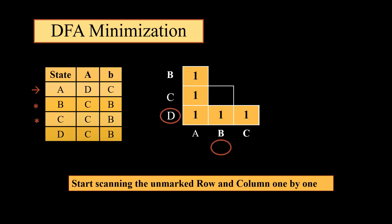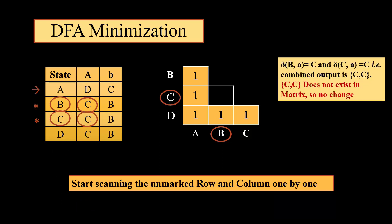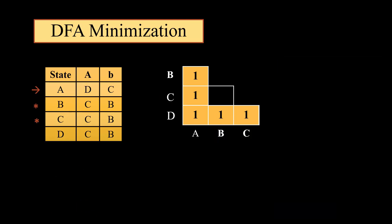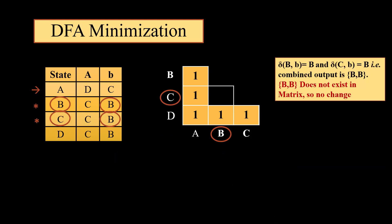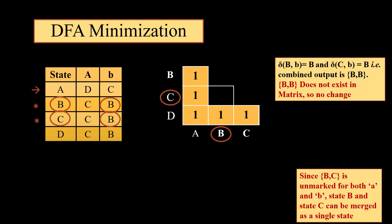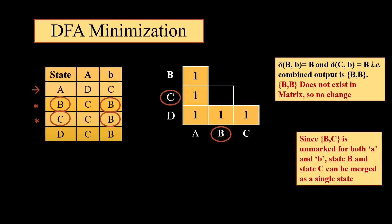Then we move to BC, the only state which is left out to be checked. BC on A gives us CC, which is not part of the matrix, and BC on B gives us BB, which is again not part of the matrix. So we can say that since BC remains unmarked till the end, states B and C can be merged as a single state.